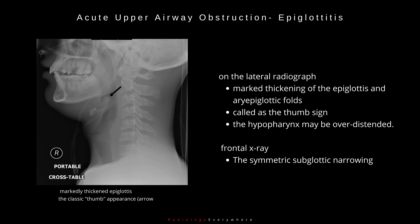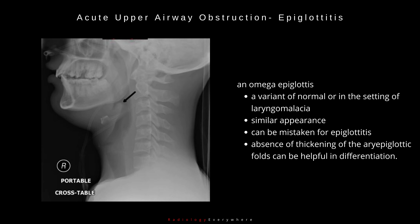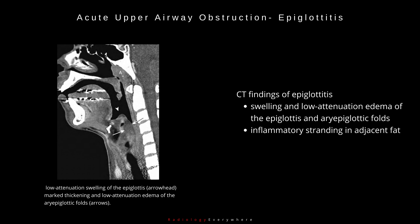On the lateral radiograph, there is marked thickening of the epiglottis and aryepiglottic folds, called the thumb sign, and the hypopharynx may be overdistended. The symmetric subglottic narrowing can be seen if a frontal x-ray is available. An omega epiglottis, either a variant of normal or in the setting of laryngomalacia, can have a similar appearance and can be mistaken for epiglottitis. Absence of thickening of the aryepiglottic folds can be helpful in making this differentiation.